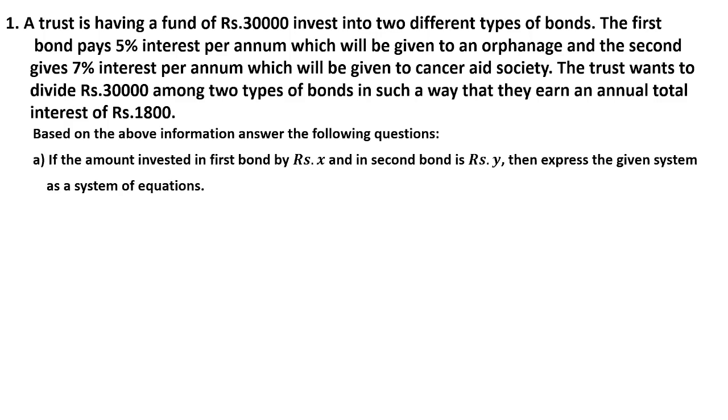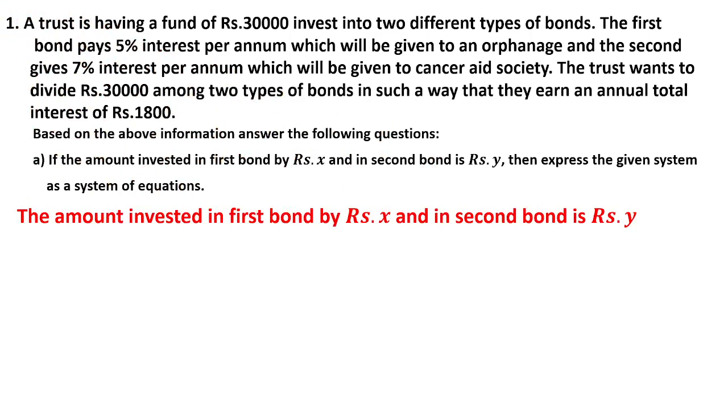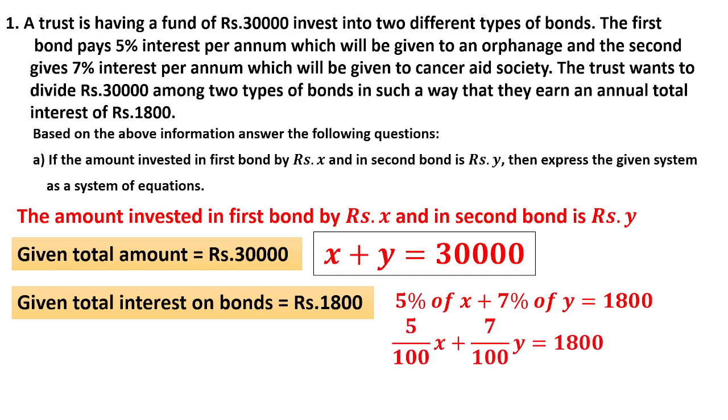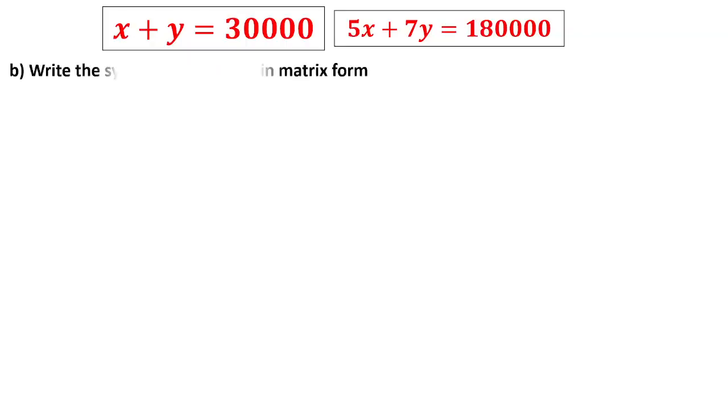Question number 1: A trustee has a fund in two different bonds. First bond pays 5% interest, second 7% interest. He wants to divide 30,000 among two types such that annual total interest is 1800. Based on this, you have to do two questions. Let x and y be the amounts invested in the first and second. By the first condition, x plus y equals 30,000. By the second condition, total interest 5% plus 7% equals 1800. Therefore 5x plus 7y equals 180,000.